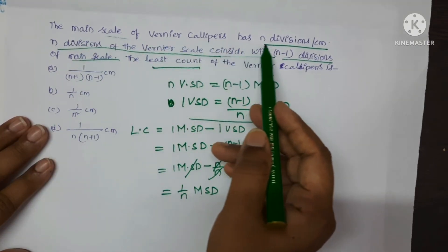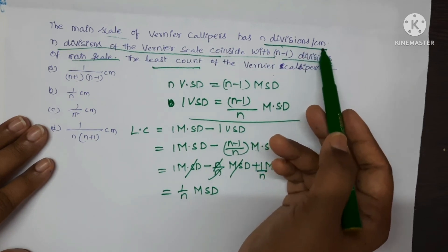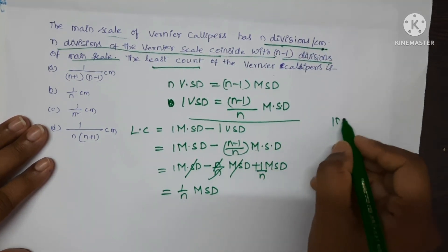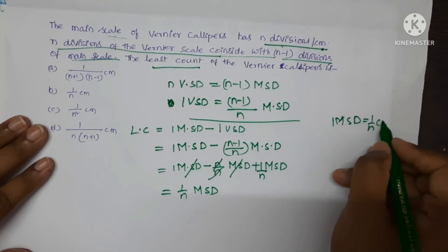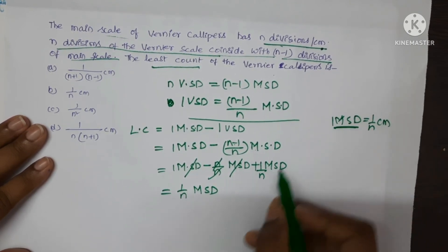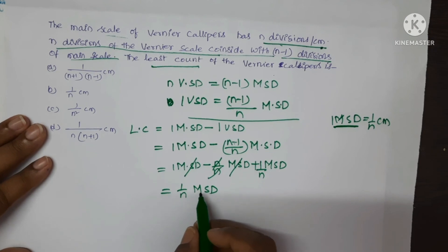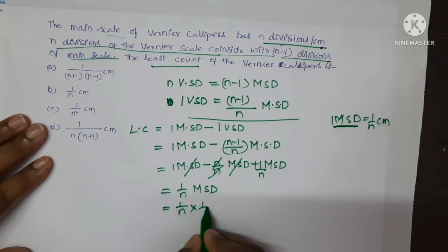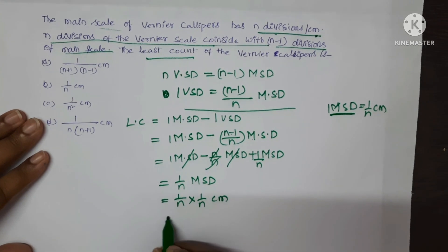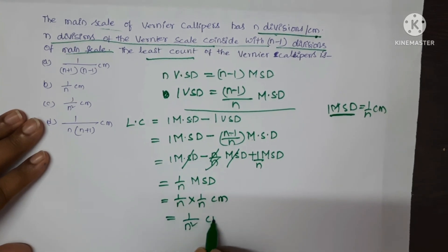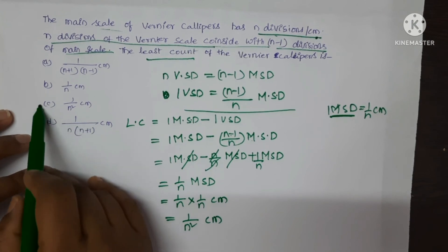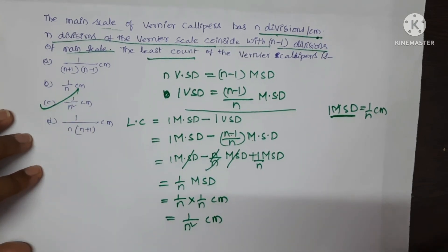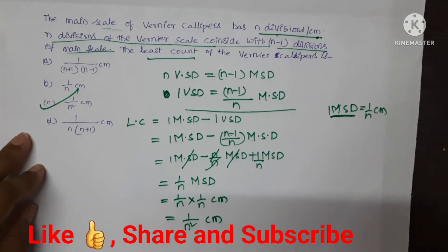Given that the main scale has n divisions per cm, 1 main scale division equals 1/n cm. Substituting: least count equals 1/n into 1/n cm, which equals 1/n² cm. C is the correct option. I hope you understand. Please do like the video, share with your friends, and don't forget to subscribe the channel.